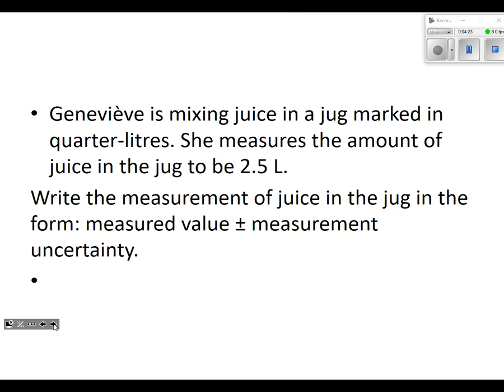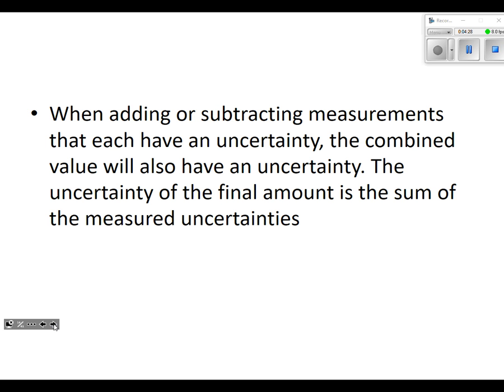This is where we left off. When adding or subtracting measurements that each have an uncertainty, the combined value will also have an uncertainty. The uncertainty of the final amount is the sum of the measured uncertainties. Fancy words for add them up.